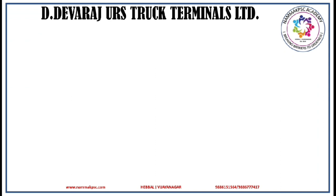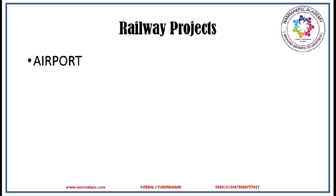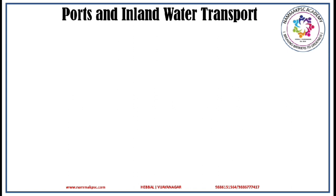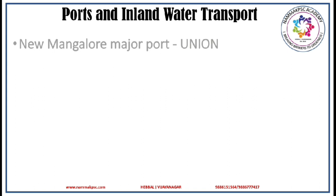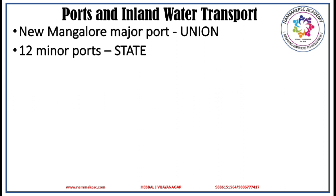Now let us study about the D. Devraj Urs Truck Terminals Limited, which was established in the year 1980 for the benefit of lorry and truck transporters at national highways in Bengaluru and other cities of the state, and also to avoid traffic congestion, road accidents and air pollution, while providing facilities for loading and unloading goods and infrastructure facilities to the beneficiaries. In the similar lines of road transportation, the Karnataka government is also working efficiently in improving the railway infrastructure and airport infrastructure to provide better communication facilities. Karnataka with a 300 km coastline has one major port and 12 minor ports. The major port, i.e., the New Mangalore Port, is managed by the central government, whereas the minor ports are managed by the state government.